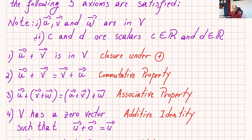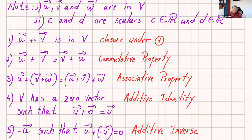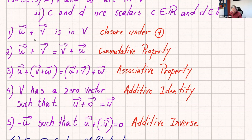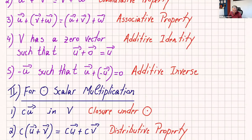You can separate those axioms. The first one: u plus v is in V — that means closure under vector addition. u plus v equals v plus u — that's the commutative property. u plus (v plus w) equals (u plus v) plus w — associative property. V has a zero vector such that u plus the zero vector equals u — that's the additive identity. And minus u such that u plus (minus u) equals zero — that's the additive inverse.